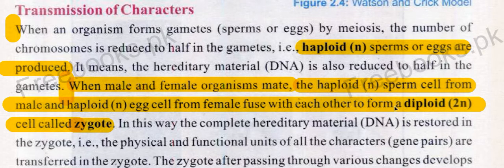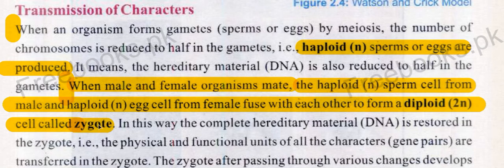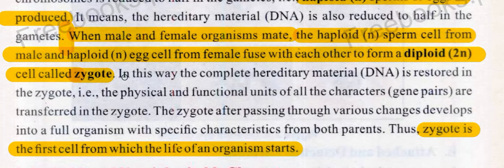They fuse together to form a diploid cell — that is, two cells, one male and one female, combine to form a diploid cell called a zygote. A short question: how is a diploid cell formed? In this way — by the fusion of haploid sperm and egg cells.